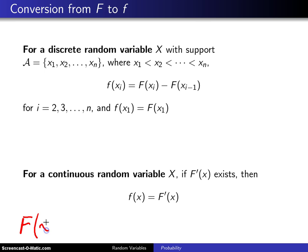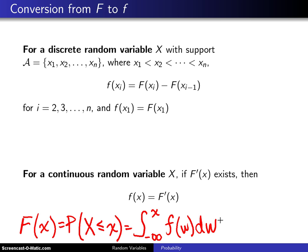When capital F of x was defined as the probability that the random variable X is less than or equal to little x, in the continuous case, that turned out to be the integral from negative infinity to x of f of w dw. We used w as a dummy variable.